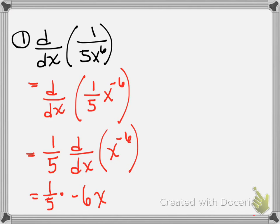So, I get 1/5 times negative 6x to the negative 7, which I can rewrite as negative 6 over 5x to the 7th.